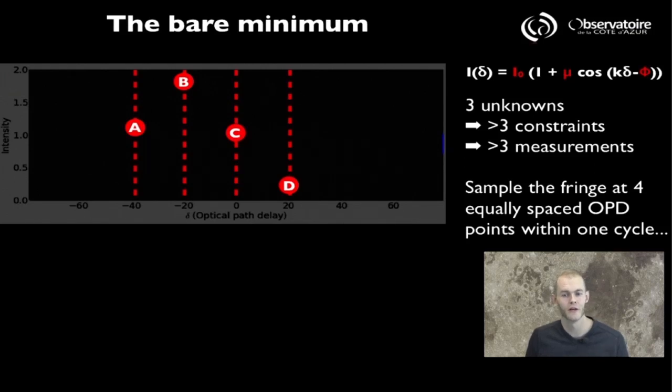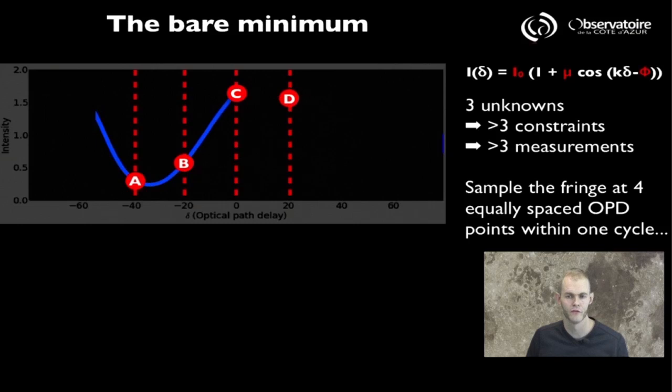So here are your four points, the intensity measured in four different locations along one cycle. And the game is to find the interference function, to model the interference function that is going to fit within those four points. Or in the same way, if you have different data points like this, you're going to have to find the three parameters, I, μ, and Φ, that best fit the data points here.